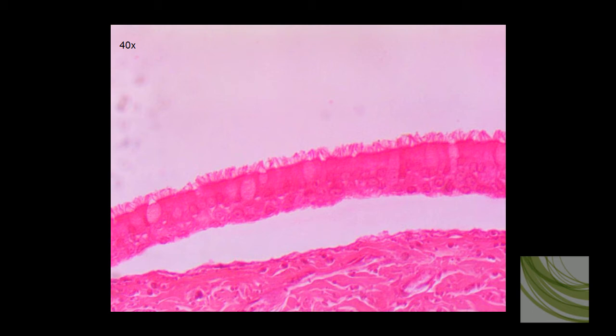Now, here we can see it's separated from the dense irregular tissue, but here is the pseudostratified ciliated columnar epithelial tissue. We can see some goblet cells, which produce mucus, and we can see very clearly the cilia on the surface of this tissue.